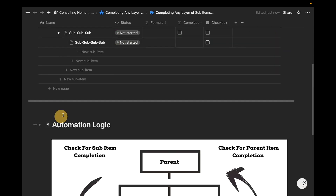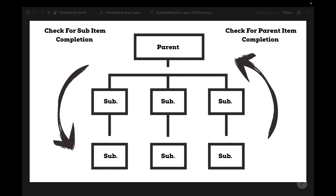Another way to look at this automation logic is like this. We're going to create two formulas and nest them within each other so that we can verify that two layers of sub-items are marked as complete, and also that the two layers of parent items are complete. In this visual, we're going to start with the left side to verify that all sub-items are complete first, and then create a formula that nests that output with the parent item equivalent.